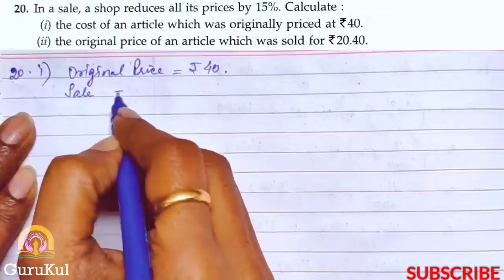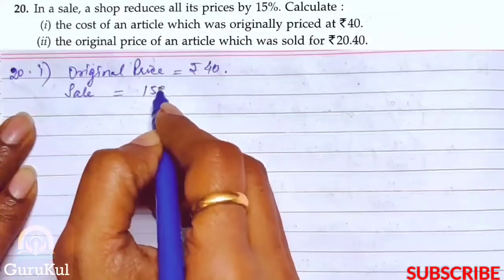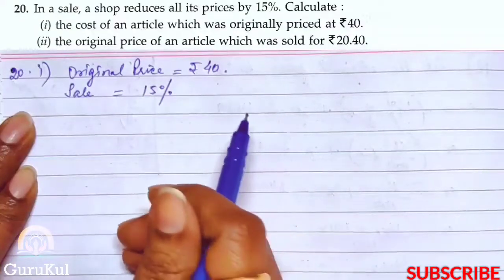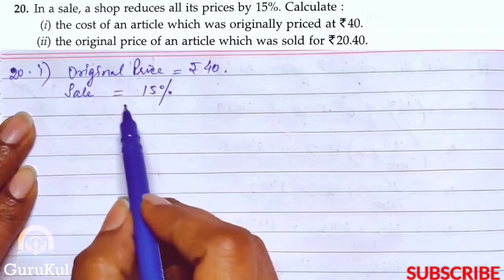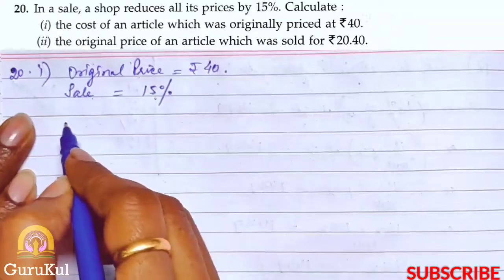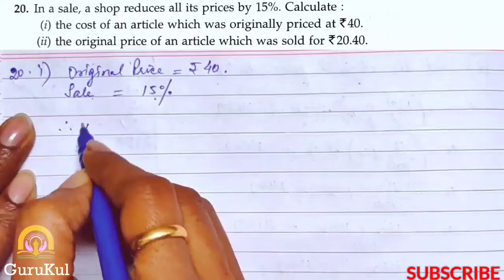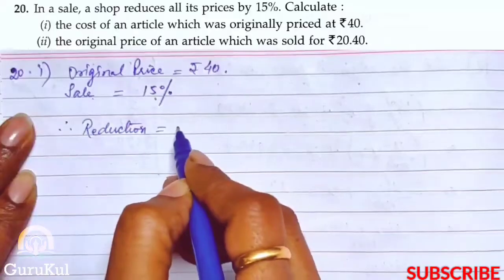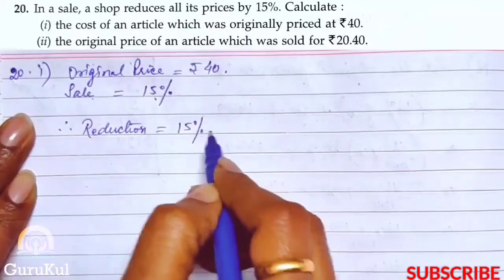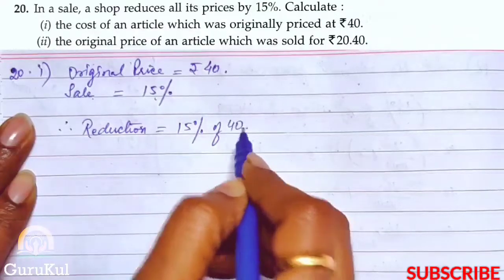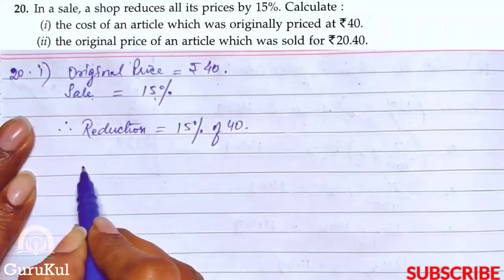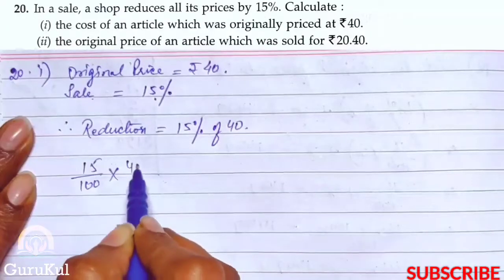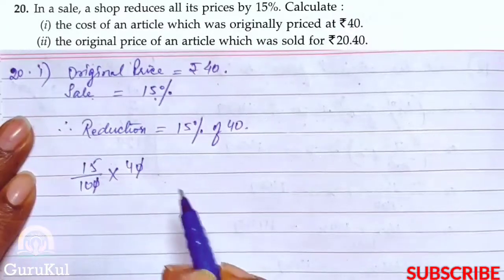Sale is equal to 15%. Sale, discount, this is all the same as the price has been reduced. Therefore, reduction is equal to 15% of the original which is 40. So, 15 by 100 of original.